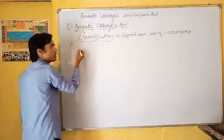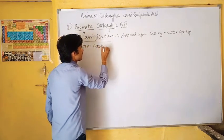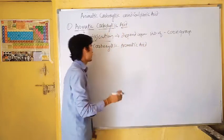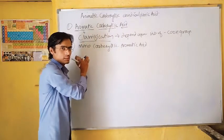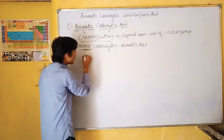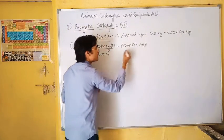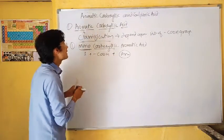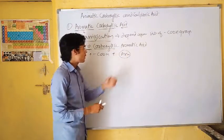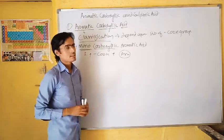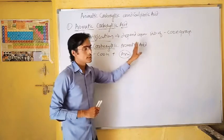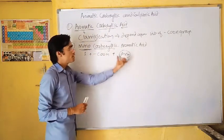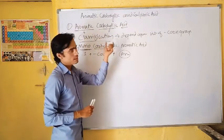First category: Mono-Carboxylic Aromatic Acid. The name itself decodes everything. Mono stands for only one, carboxylic stands for -COOH, and aromatic acid means which contains an aromatic moiety. So the definition: the aromatic acid which has only one -COOH group directly linked with an aromatic ring — such kind of aromatic acids are said to be Mono-Carboxylic Aromatic Acid.